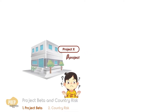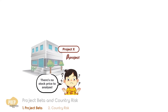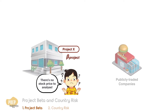How do we estimate the beta of a project under consideration? Obviously, there's no stock price to analyse as the project has not even started. One way is to make inferences from other publicly traded companies which are engaged in a business similar to the project under consideration.